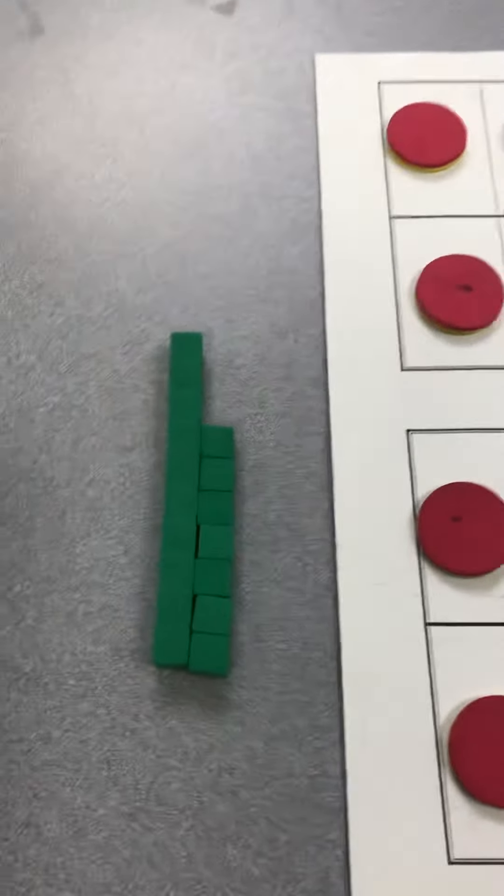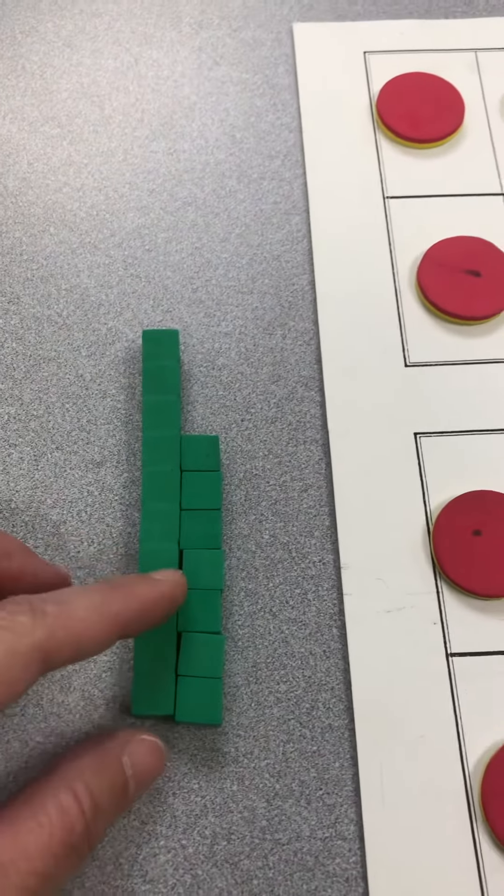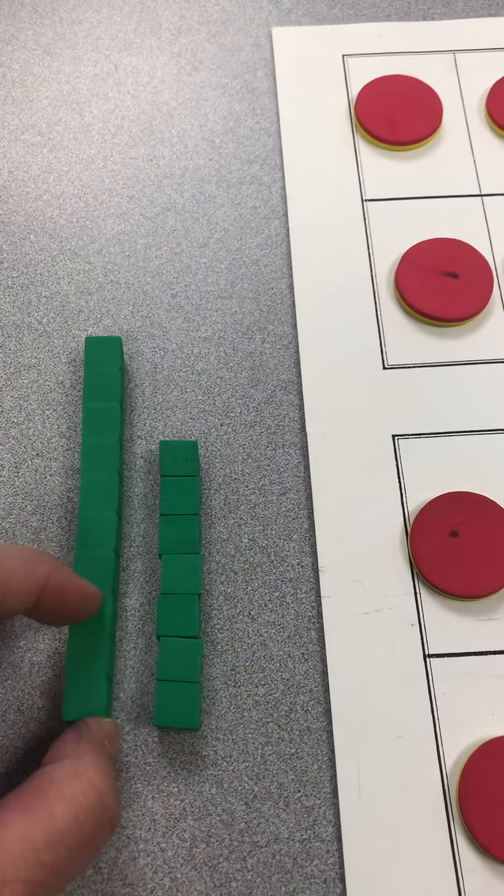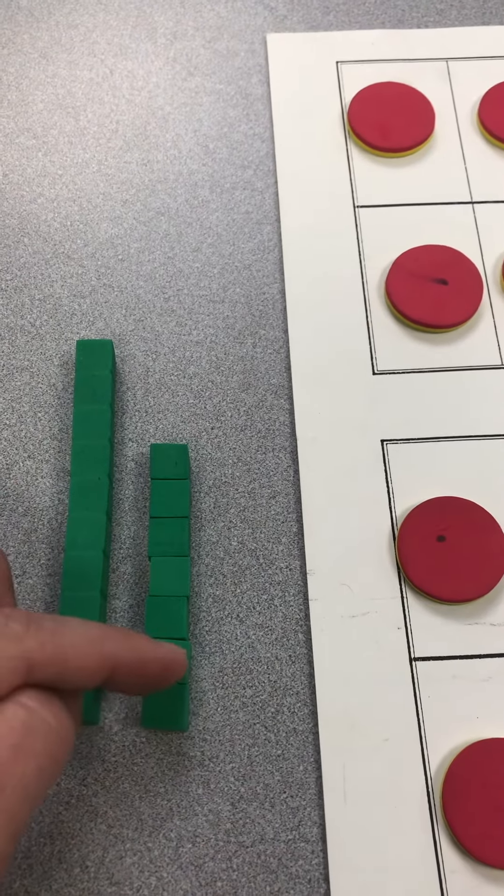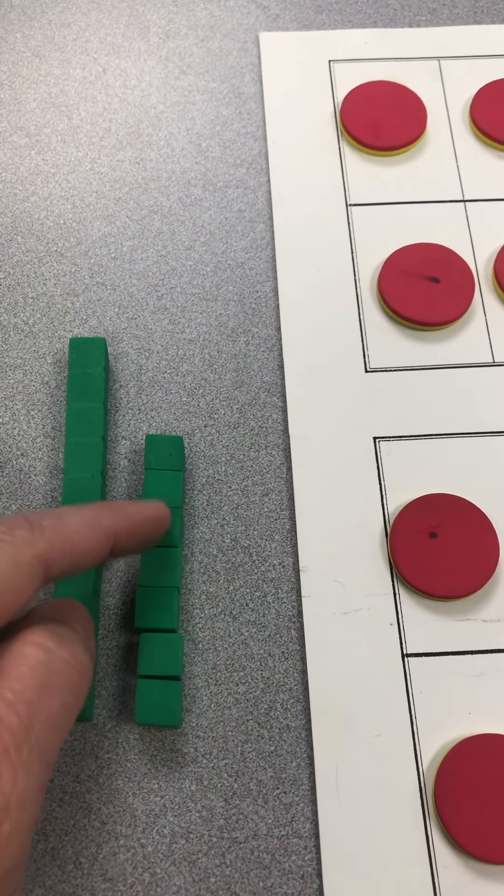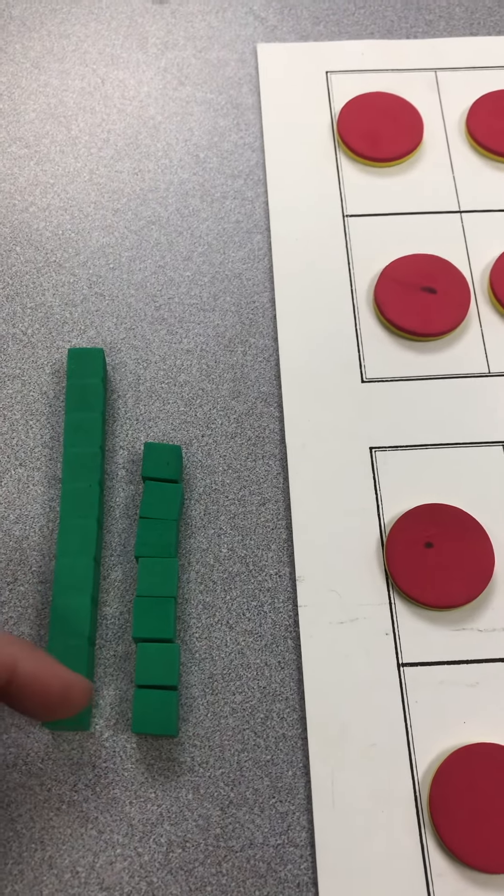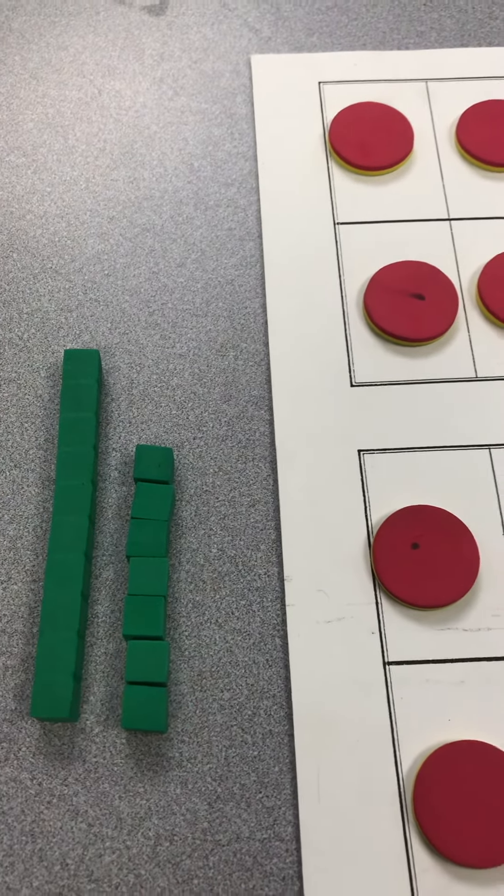Another way to show 17 is right here, where you've got a group of 10. That's 10. And 7 more. 1, 2, 3, 4, 5, 6, 7. So 10 and 7 makes 17. That's the number 17.